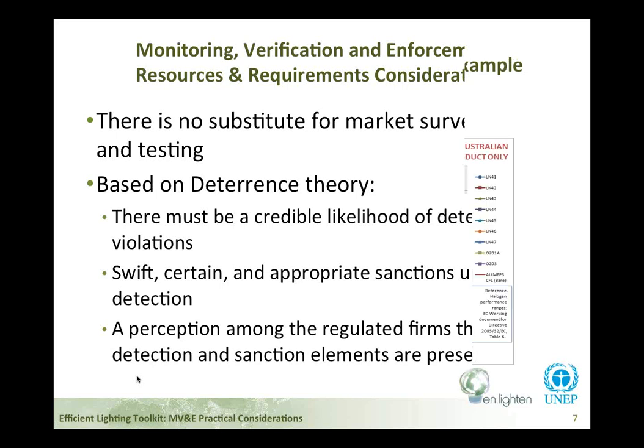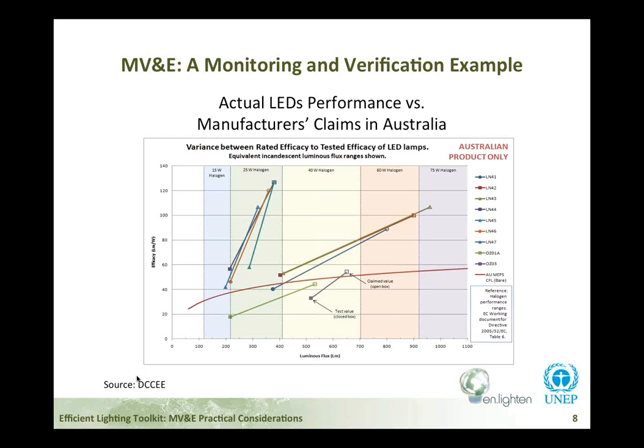Here is one of my favorite graphs. This shows the performance of LED lamps on the Australian market — actual performance versus claimed performance. The government of Australia went out and bought lamps on the market and tested them. You can see some lamps claiming equivalency to a 75-watt halogen are only showing the performance of a 25-watt halogen. Testing is significant — it can help determine the right stringency level in the beginning and can also help police the market.